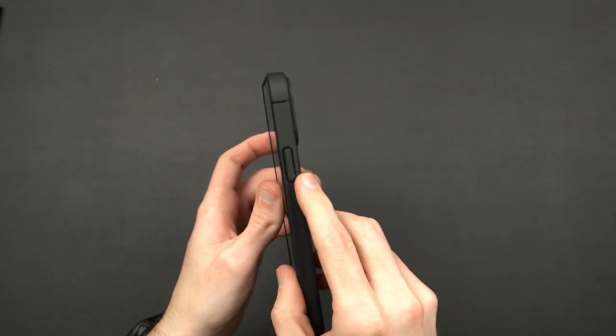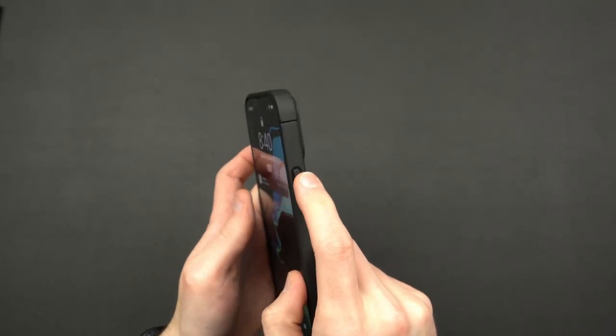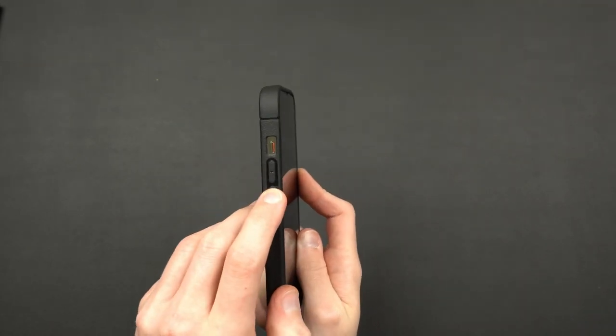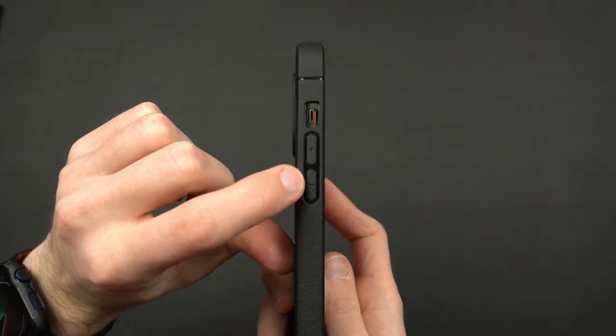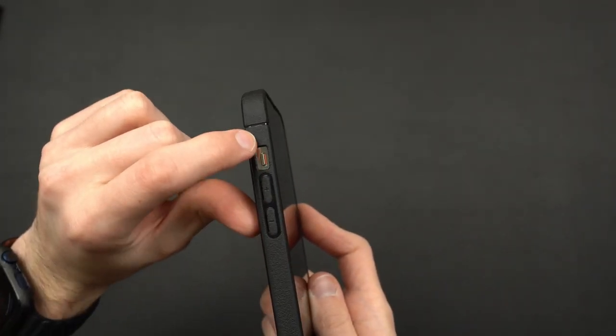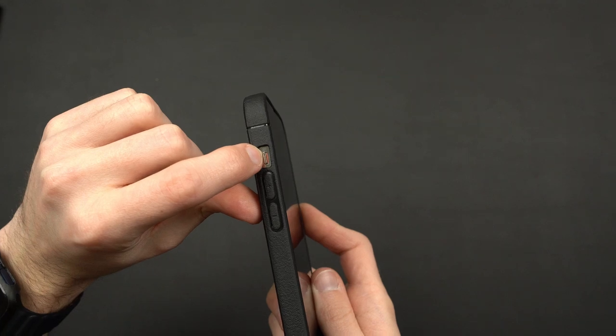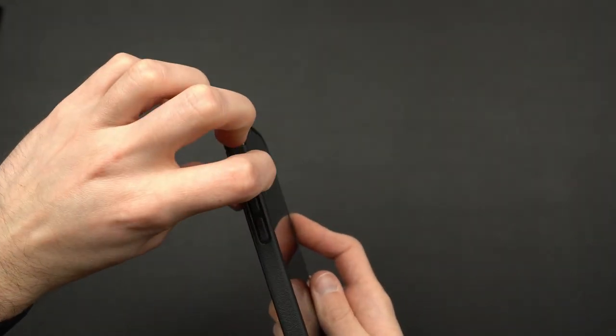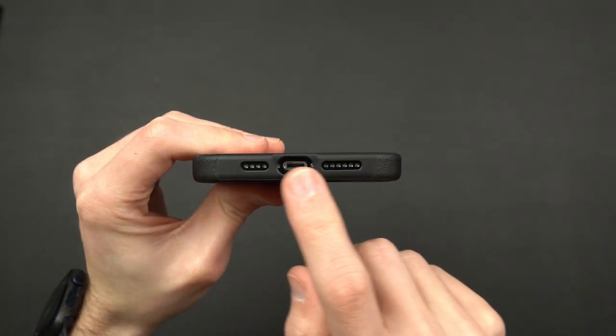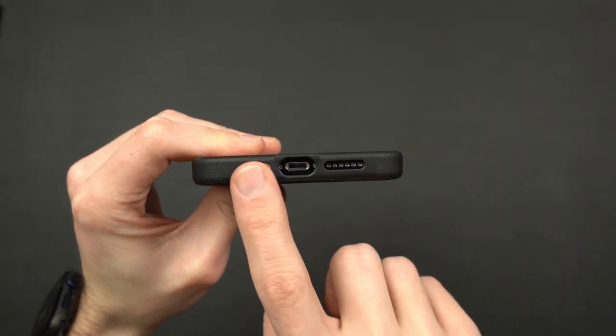As far as the power button and volume up and down, they're definitely tactile, you're not going to have any issues with those. Now they do have the little air slits in them, so just take note of that - some people don't like it. The mute slider switch is going to be good to go, nice and wide. On the bottom you also will not have any issues with the cutouts as far as the speakers and the charging port goes.